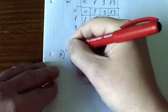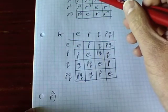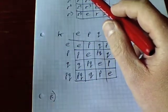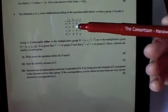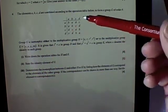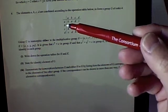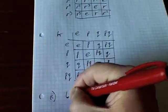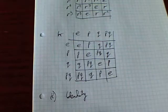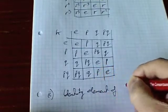Part two, they said state the identity element of G. The identity element of G is going to be the one... if you have a look at the question here, what we are looking for is the element which results in a row or column identical to either the title row at the top or at the left. We are looking for ABCD. If we see in the table here, that second row ABCD is exactly the same, that means that B must be the identity element, and you can see it down there in the column. The identity element of G is B.